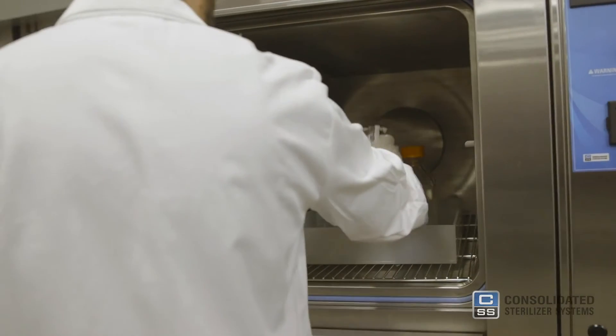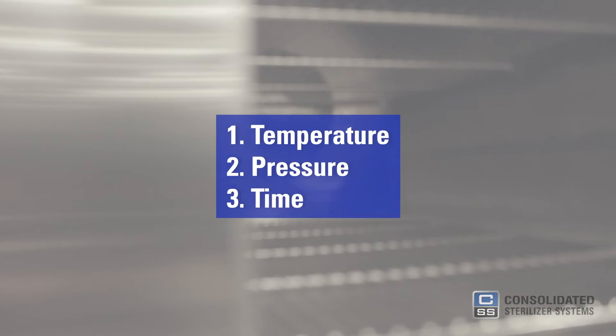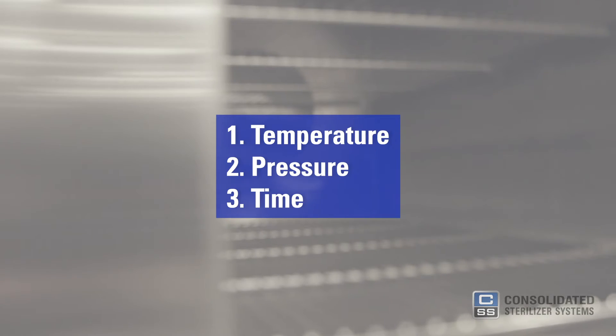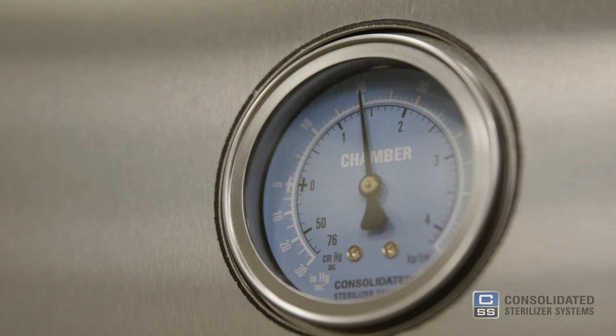In order to kill a cell, you need three things: temperature, or heat; pressure; and time. All three parameters must be met in order for the product to be sterilized. Starting with temperature, you need to raise the temperature to a degree at which the proteins in the cell wall break down and coagulate. Steam heat is very good at doing this because it is a very efficient medium for heat transfer.